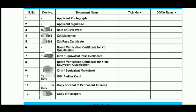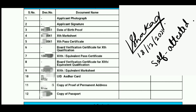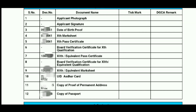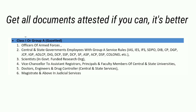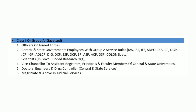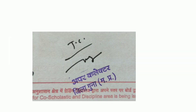All these documents — except the applicant's photograph and applicant's signature — should be self-attested. In case you don't know what self-attestation is, and for the Board Verification Certificate, a Class 1 Gazetted Officer should attest the document. All high-level government employees are Class 1 Gazetted Officers. In my case, I got attestation from the Upper Collector. If you cannot get attestation from a Gazetted Officer, simply get a notary done on it — it is very easy and any advocate can do it for a maximum of 50 to 100 rupees.